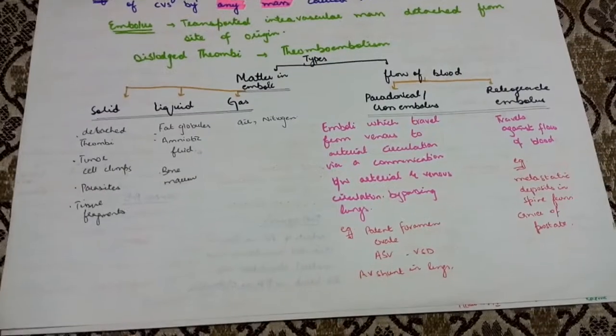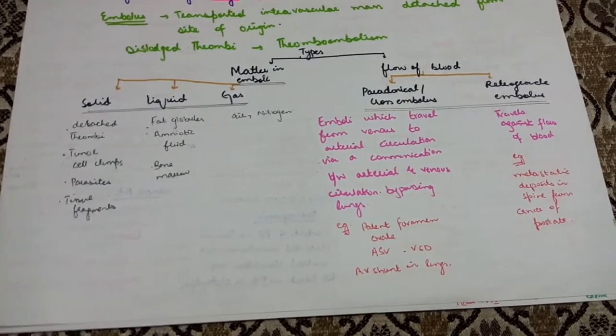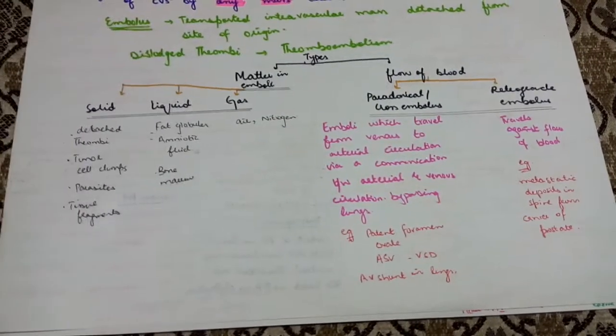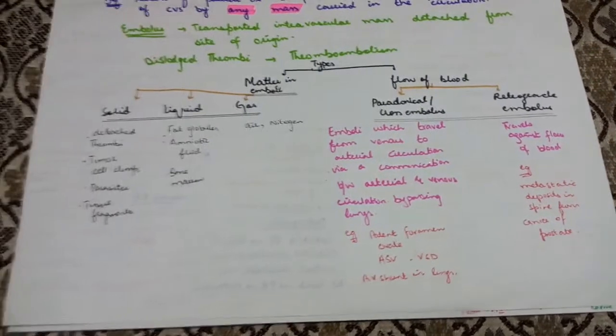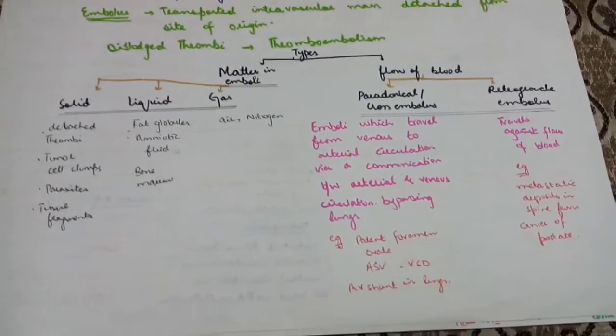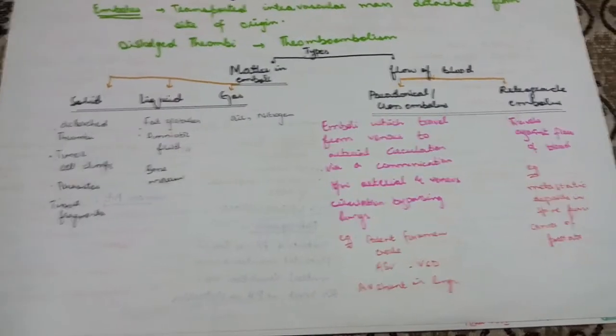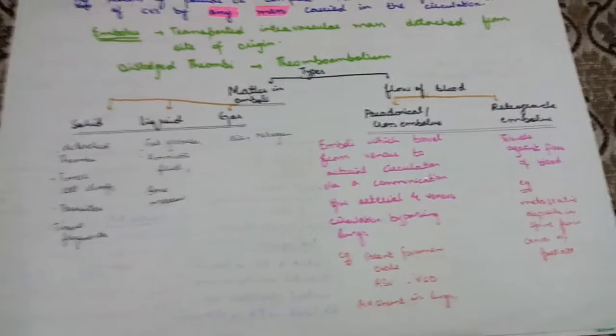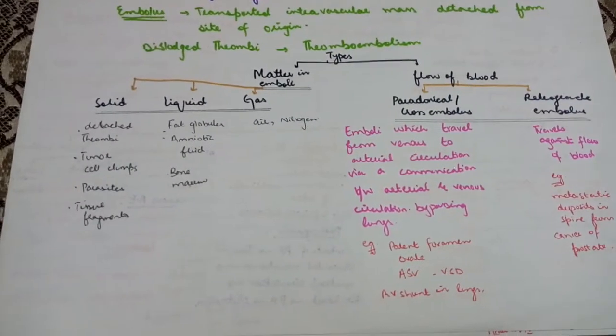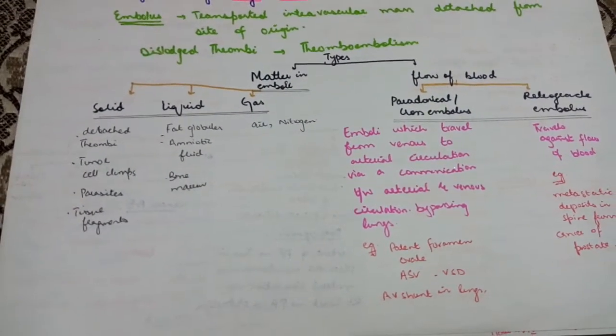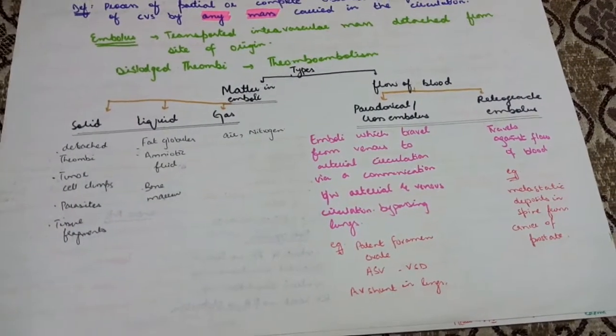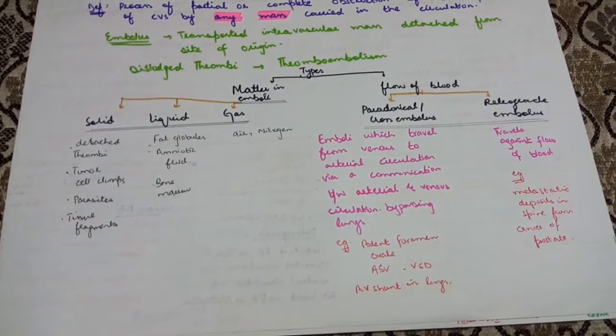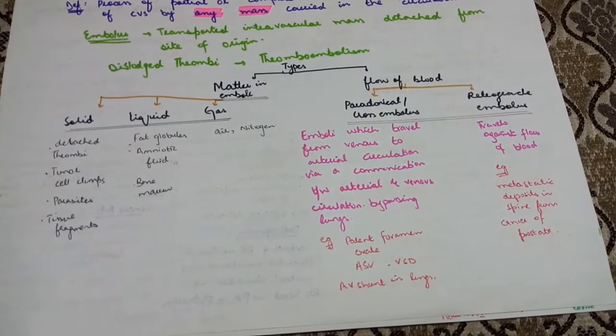I must explain what sort of mass it is. Mostly when there are thrombi, they are dislodged thrombi, that's why they are called thromboembolism. The embolic mass can be solid, liquid or gas. Solid includes detached thrombi, tumor cell clumps, atheromatous material, tissue fragments, parasites, bacterial clumps, and foreign bodies. Liquid includes fat globules, amniotic fluid, and bone marrow. Gas includes air and nitrogen.